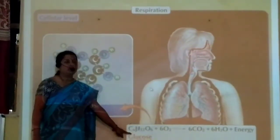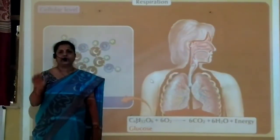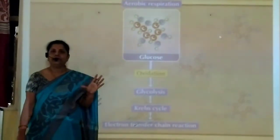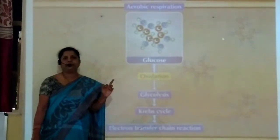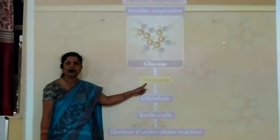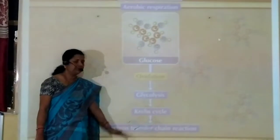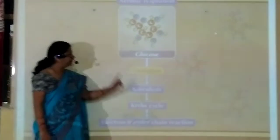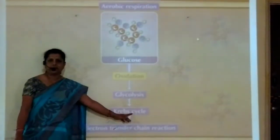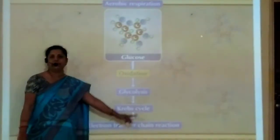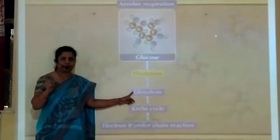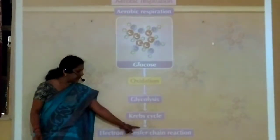Aerobic respiration occurs in higher animals including human beings. Glucose undergoes oxidation in presence of oxygen and energy is released, but the energy releasing process is completed in 3 steps. The first step is glycolysis, the second is the Krebs cycle, also called the TCA cycle, and the third is the electron transfer chain reaction. These are the 3 steps in which aerobic respiration is completed.